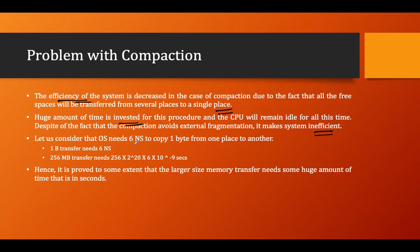Consider this example: the operating system needs six nanoseconds to copy one byte from one place to another. For 256MB transmission, that is 256 × 2^20 bytes × 6 × 10^-9 seconds, which results in a very large amount of time in seconds. You can see how much time is consumed in compaction. Hence, it is proved that large memory transfers require a huge amount of time, which is why compaction is not a very popular method to resolve the external fragmentation issue in variable size partitioning.